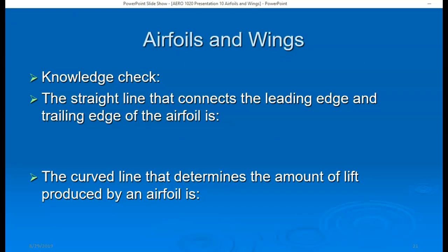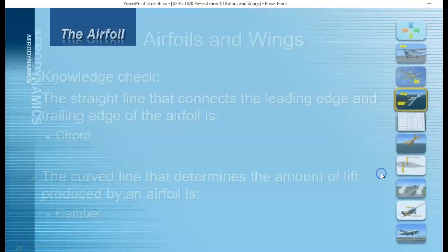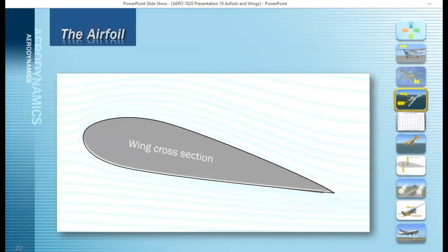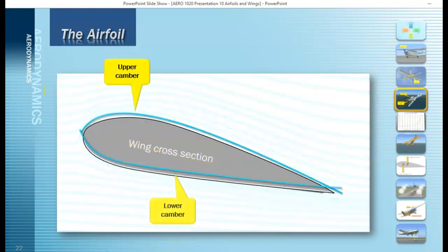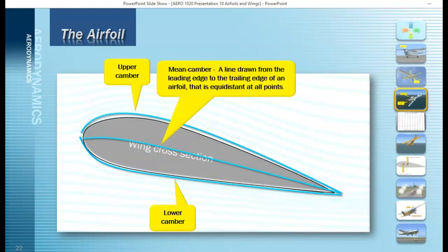Let's check our knowledge. The straight line that connects the leading edge and trailing edge of the airfoil is called the cord. The curved line that determines the amount of lift produced by an airfoil is called camber. The leading edge is the forward section of the airfoil and the trailing edge is the aft section. An imaginary line connecting them is the cord line. There is upper camber and lower camber, and the mean camber line is the average — a line drawn from leading edge to trailing edge that is equidistant at all points.